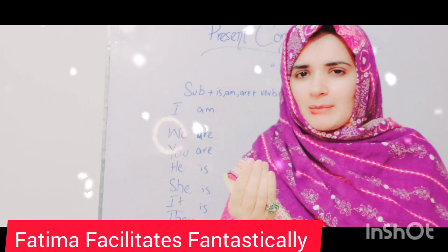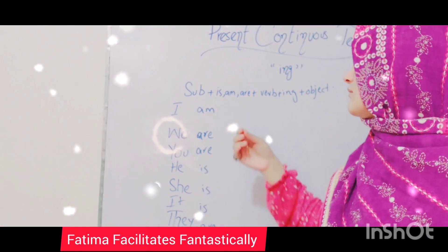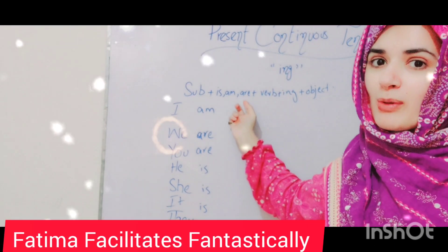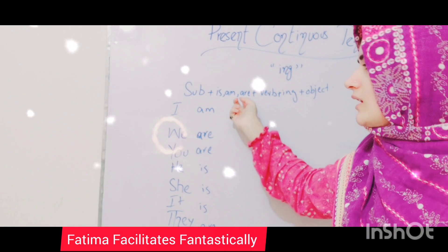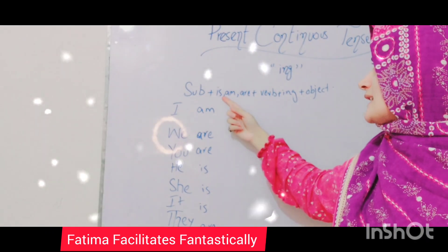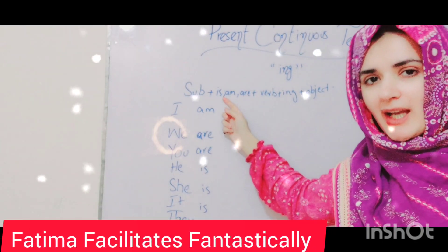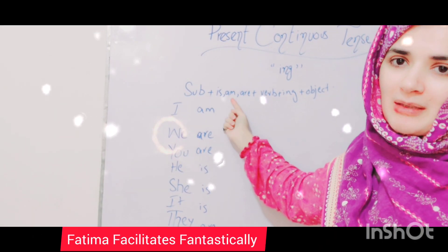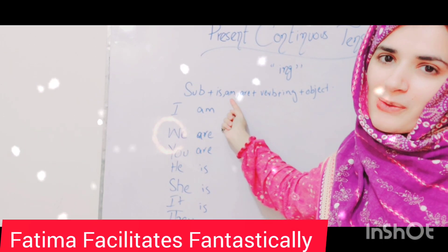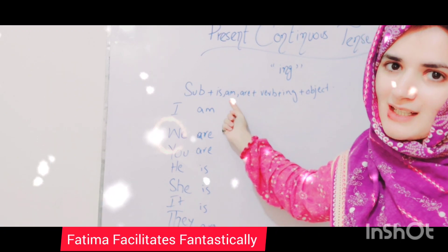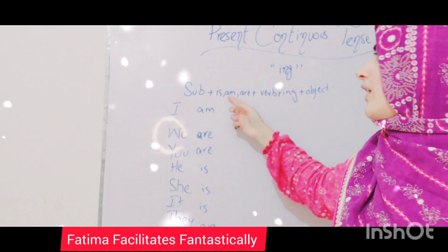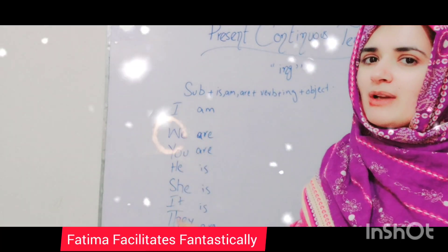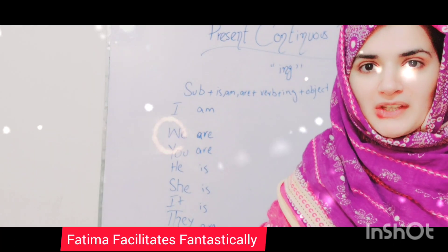The three helping verbs are am, is, and are — very easy. 'Am' is used with I, 'is' is used with he, she, and it, and 'are' is used with you and they.